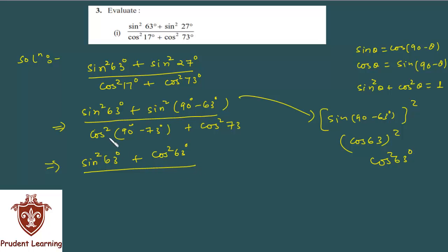Likewise in the denominator, cos 90 minus theta is what? Sin theta. Therefore this will be sin square 73 degree, because theta is 73, plus the other term is cos square 73 degree. Now you can see.